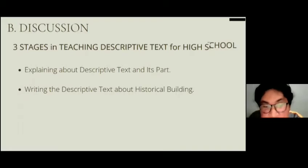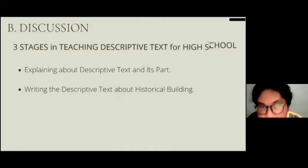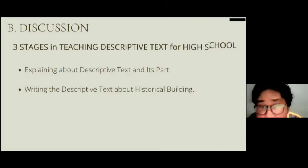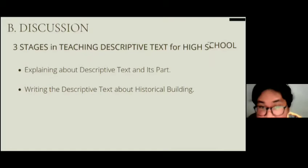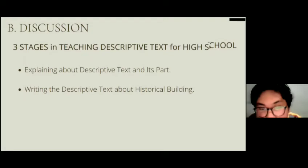The second stage is writing the descriptive text about a historical building. After students comprehend the descriptive text, they will be asked to write through some stages: brainstorming, drafting, revising, editing, and publishing. First, students report all their ideas through brainstorming. As Whitaker says, brainstorming means writing everything you know about your topic — information and opinions related to it. After brainstorming, they continue to drafting. There will be more than one draft to make a good writing, so drafting takes longer time.